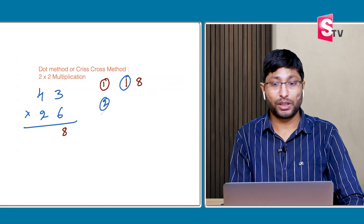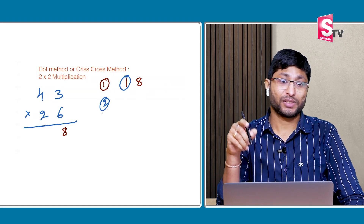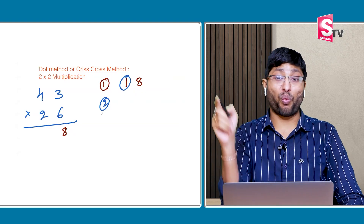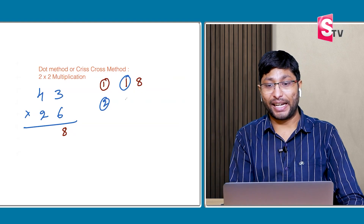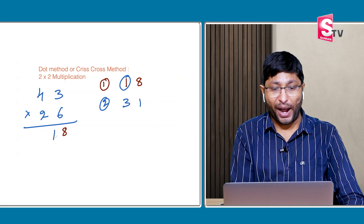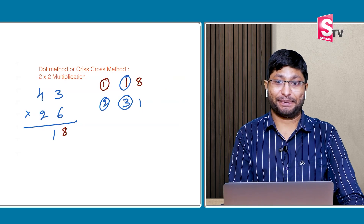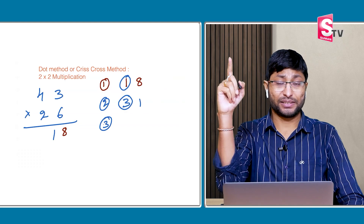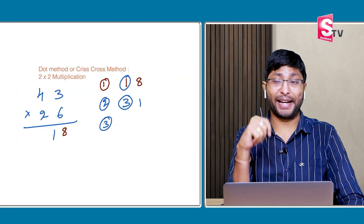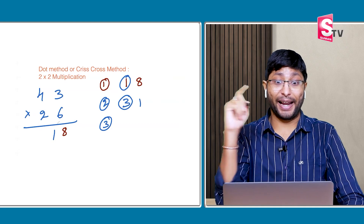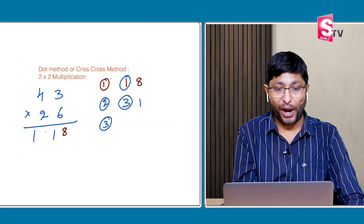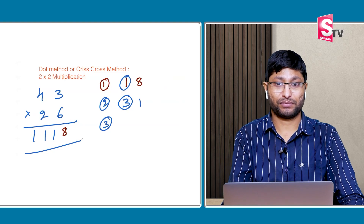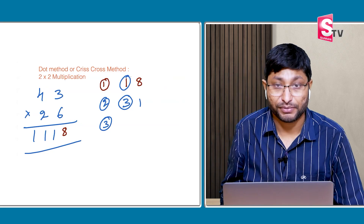Step 2: 4 × 6 = 24, and 3 × 2 = 6. 24 plus 6 = 30. Plus 1 carry = 31. Write down the 1, and 3 carry. Step 3: 4 × 2 = 8. Plus 3 carry = 11. So the answer is 1118. Very simple!